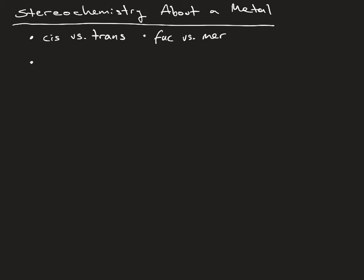But in addition, you can also have delta versus lambda isomers. These apply to chiral metal complexes.